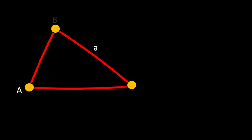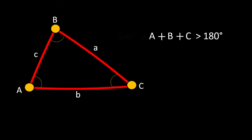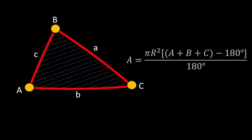Let's put some labels to know the properties of a spherical triangle. One property is that the sum of the interior angles is greater than 180 degrees but less than or equal to 540 degrees. To compute the surface area of the spherical triangle, we have the formula: A is equal to pi r squared times the quantity of (A plus B plus C minus 180 degrees) divided by 180 degrees, where r is the radius of the sphere. I will be creating another video to derive this formula, but for today let's just use it as a reference.